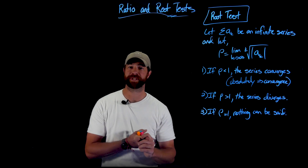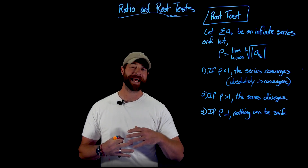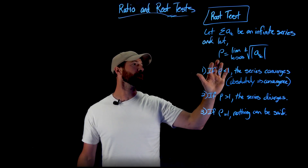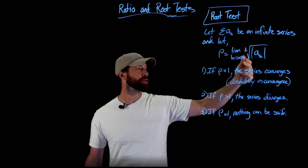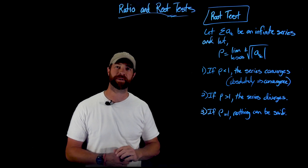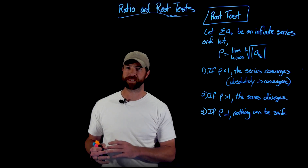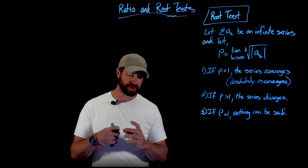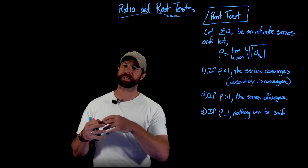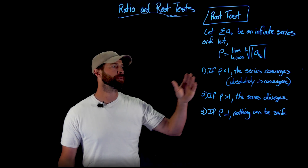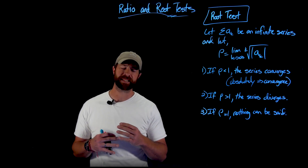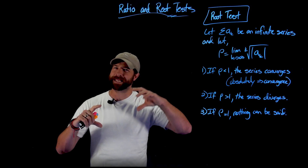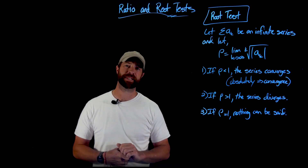Now for the root test — we have different applications, a different setup, but the same conclusions. We let rho equal the limit as k goes to infinity of the kth root of the absolute value of the kth term of the series. The conclusions are exactly the same, because again we compare to a geometric series. The root test is useful when you have a complicated expression raised to the k power — applying a root to an arbitrary expression can get gnarly, but if you have something to the k power, taking the kth root makes life much easier.